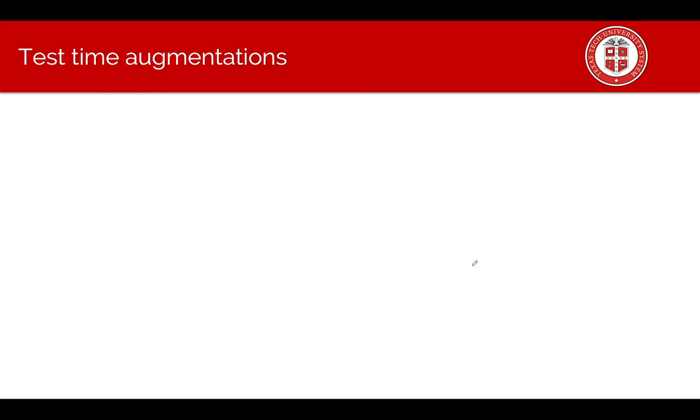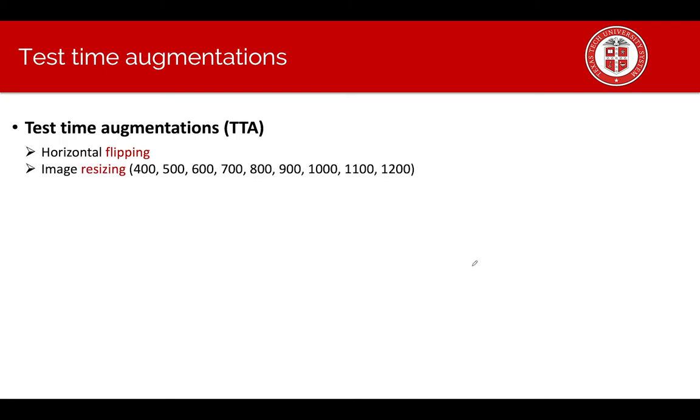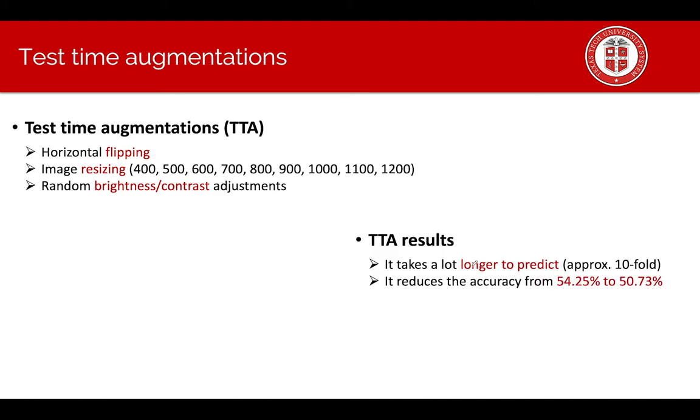Next, we also experiment test time augmentation. Specifically, we experiment horizontal flipping, image resizing and random brightness contrast as well. The TTA results show that it takes a lot longer to predict, in this case about tenfold longer, and it reduced accuracy actually. Therefore, we do not use TTA in our implementation.